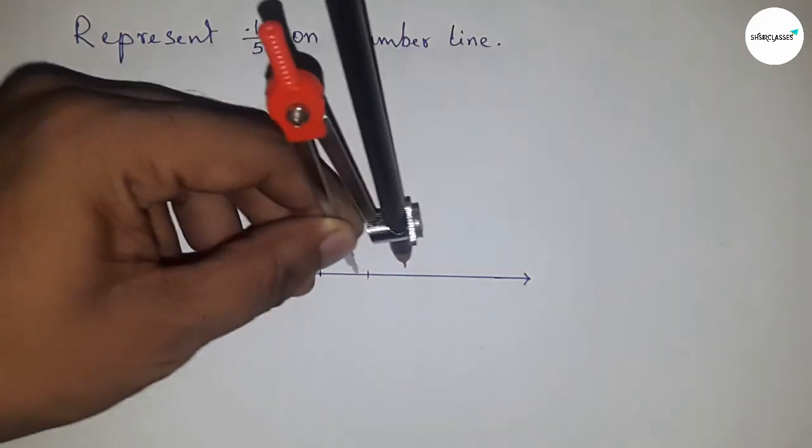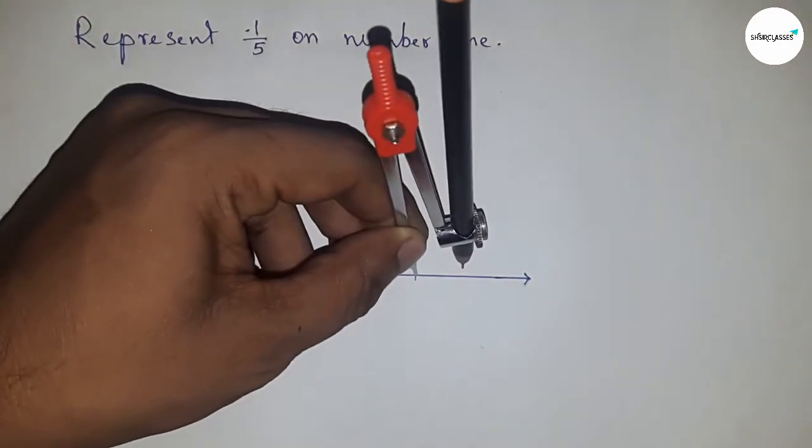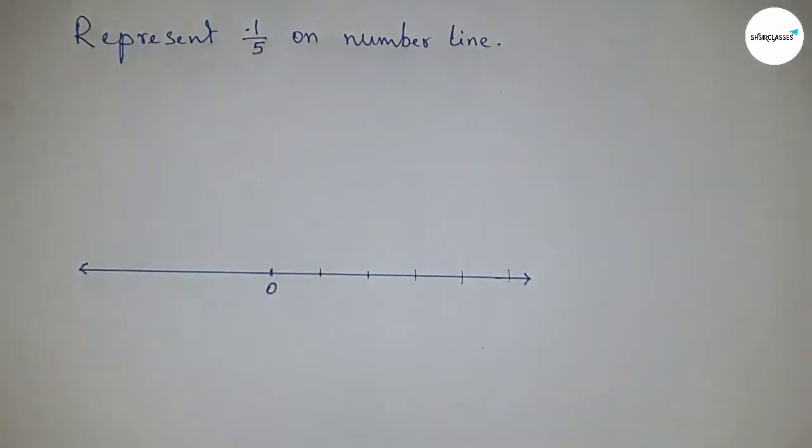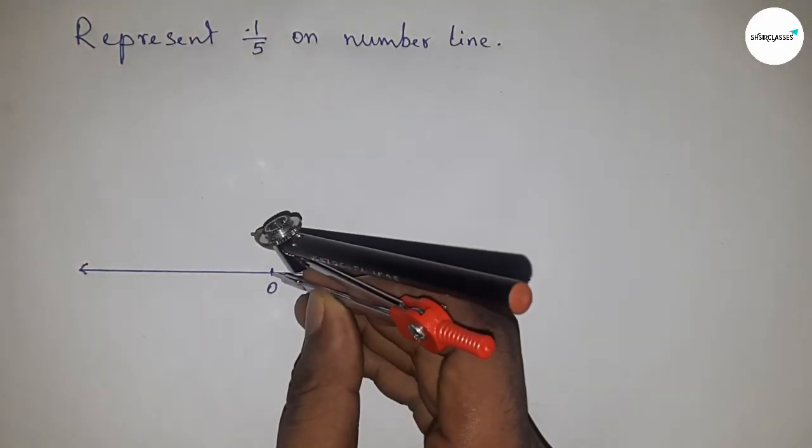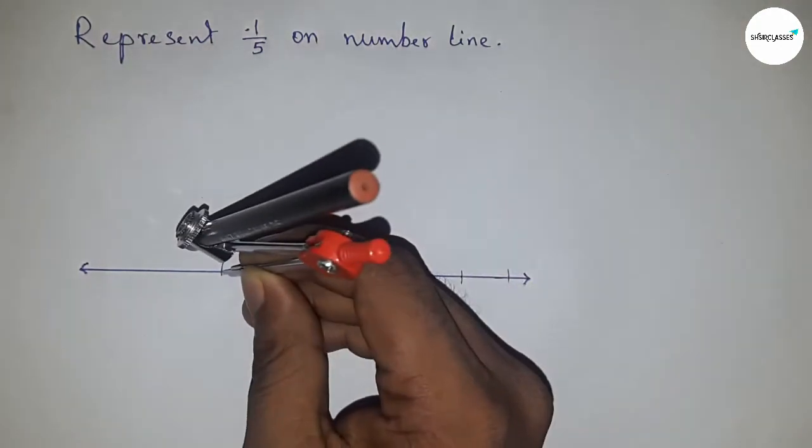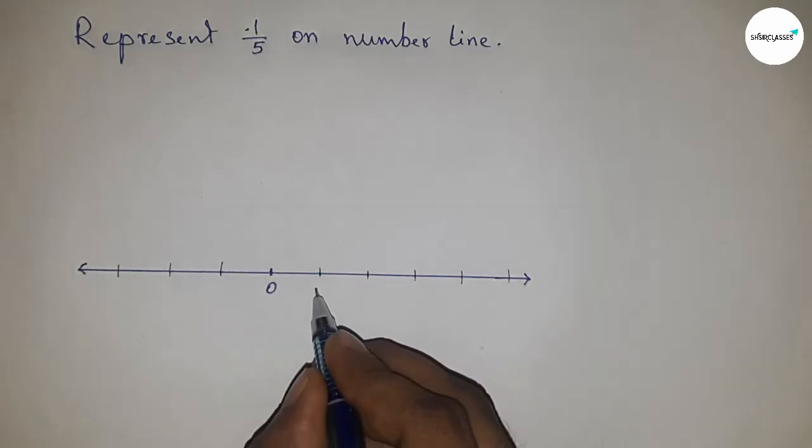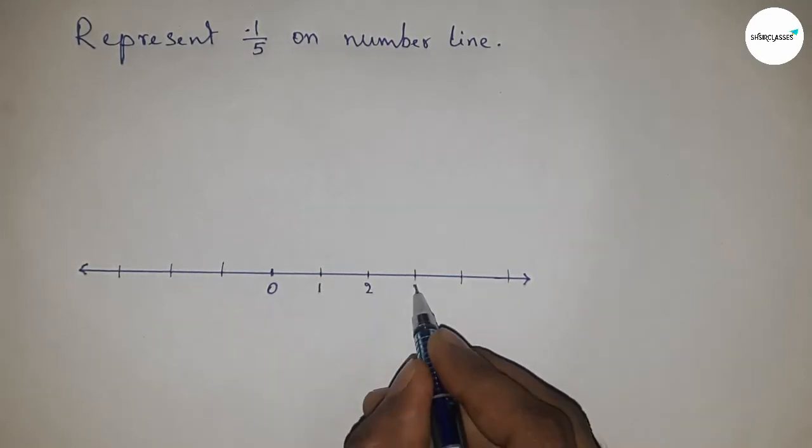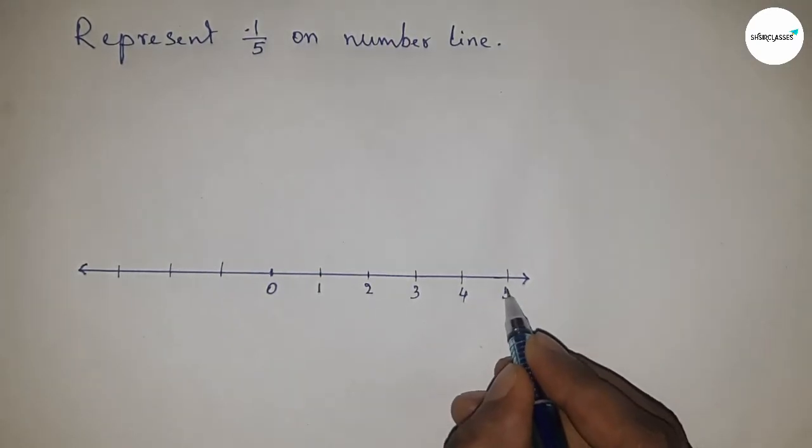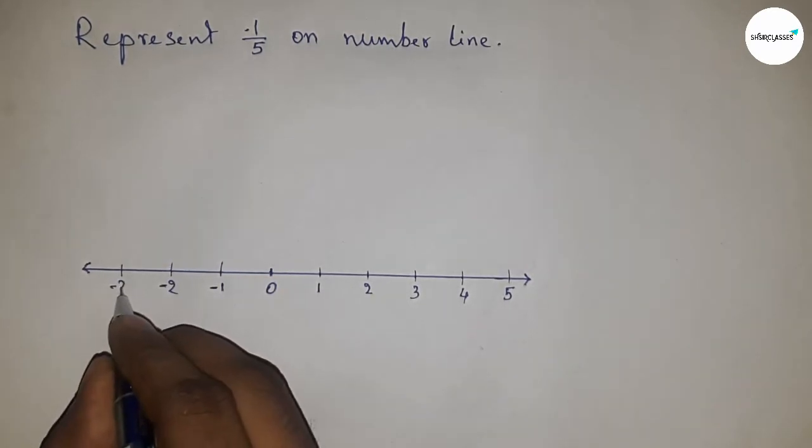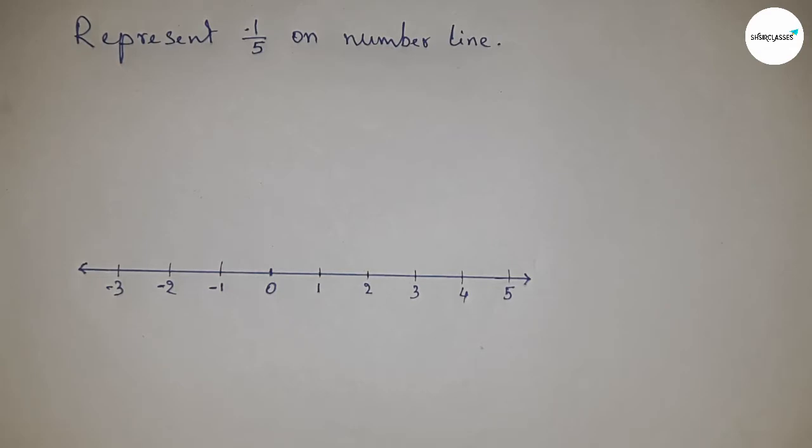by taking any length with a compass and marking the numbers on the line. All lengths are equal, and this type of length is called unit length. This is one, two, three, four, five and so on, and on this side minus one, minus two, minus three and so on. Next, we divide